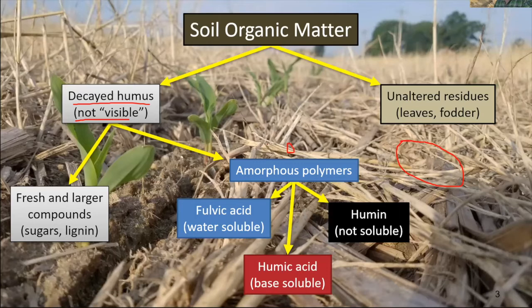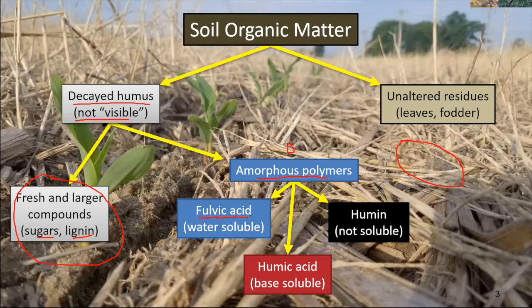You have fresh compounds — sugars and lignin — that your visible eye can't see, but maybe with a microscope you could see sugars and lignin in the soil. Then we have what we call amorphous polymers; amorphous means it has no shape. You might actually know these words because some micronutrients or additives use the terms fulvic and humic acid. Fulvic acid in the soil is organic material that's water soluble, so it moves with water. That's why some micronutrients might be attached to a fulvic or humic acid — it keeps them from bonding to the soil and allows them to move through the soil. Fulvic acids are really fresh material; when you put out chicken litter or when corn dies and becomes residue, it produces fulvic acids.